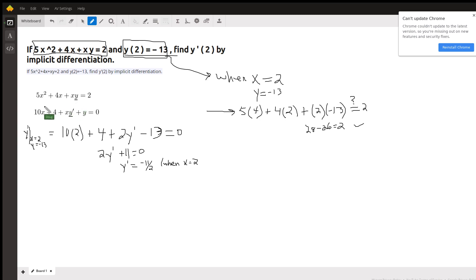So the derivative of 5x squared is 10x, the derivative of 4x with respect to x is 4. For this term we have to use the product rule: first function x times the derivative of the second would be xy prime, plus the second function y times the derivative of the first would be 1.